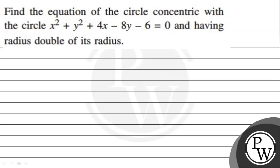Hello. Let's read the given question. The question states: find the equation of the circle concentric with x² + y² + 4x minus 8y minus 6 = 0, and having radius double of its radius.